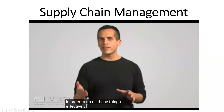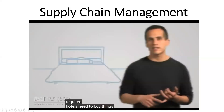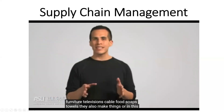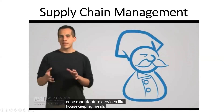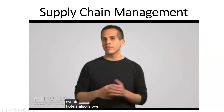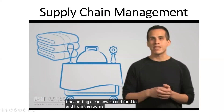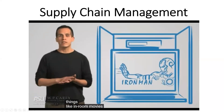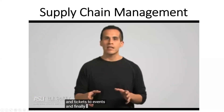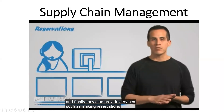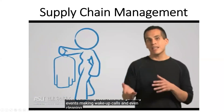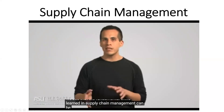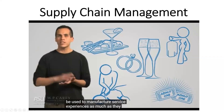In order to do all these things effectively and efficiently, hotels need to buy things like beds, furniture, televisions, cable, food, soaps, and towels. They also make — or in this case manufacture — services like housekeeping, meals, massages, and special events. Hotels also move things like transporting clean towels and food to and from the rooms, as well as transporting guests and their luggage to and from the airport. They even sell things like in-room movies, internet services, and tickets to events. They also provide services such as making reservations, organizing events, making wake-up calls, and cleaning and pressing clothes. The fundamental skills learned in supply chain management can be used to manufacture service experiences as much as they aid in manufacturing products.